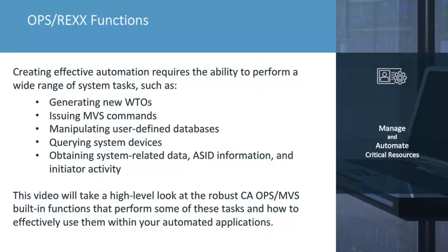In a nutshell, ZOS automation involves reacting to system events — from messages and commands to time-of-day events — and then performing a wide range of system tasks. Tasks such as issuing alert WTOs or messages, initiating system or database commands, sending emails, and much more. Obtaining specific system or ACID-related data, such as the name of the system or SysPlex, determining the step name of a particular job, or querying the status of a system DASD volume, is critical in the decision-making logic within your automation. This video provides an overview of the CA OpsMVS built-in functions and how they can be used to obtain some of this critical system data.